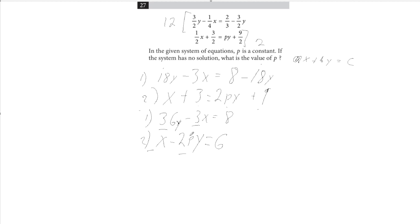So negative 3 times negative 2p will be 6p. We get 6py, negative 3 times x is negative 3x, and then negative 3 times 6 is negative 18.